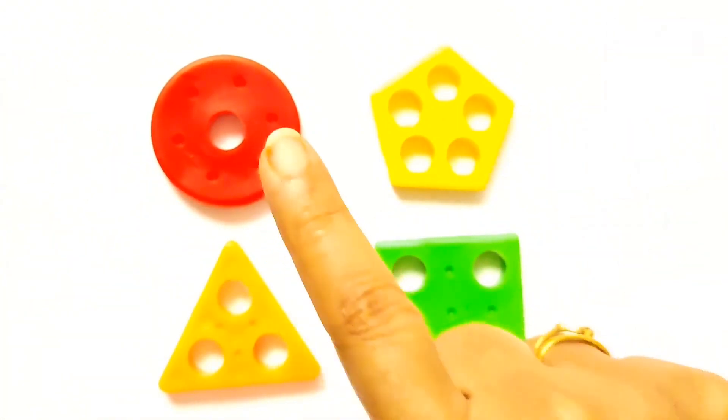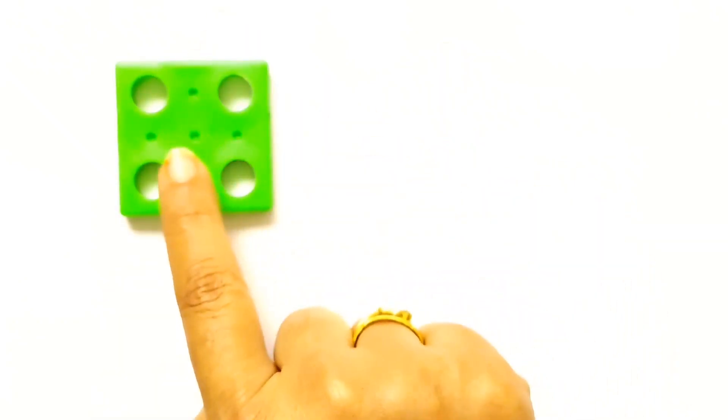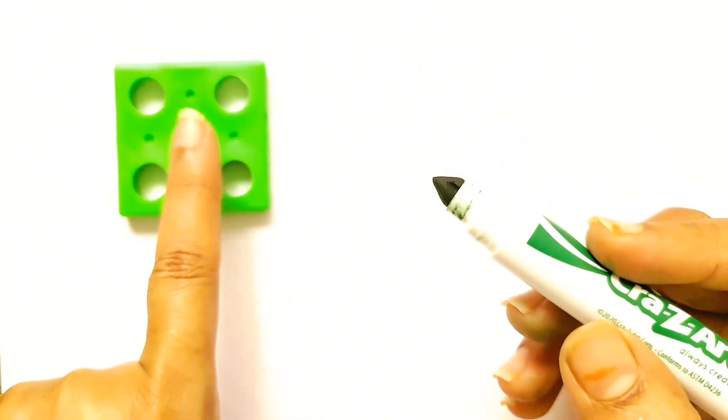Now let's see what shapes we have: circle, pentagon, triangle, and square. Now let's paint them and create colorful shapes. So we will take green color and make a shape of a square.